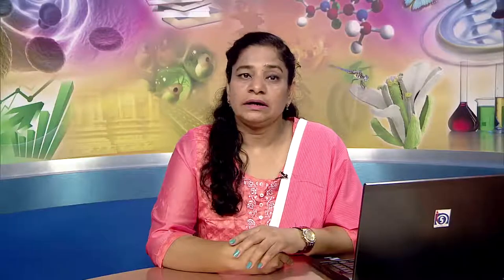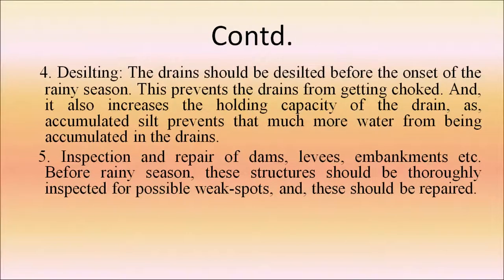Next is rainwater harvesting. If there are several rainwater harvesting systems, rainfall in that area would go into the subsoil locally rather than straining the drainage system. The lower the amount of water trying to go through the drainage system, the easier it is for the system to drain off the water. Drains should also be desilted before the onset of the rainy season, which prevents choking and increases the holding capacity of the drains.